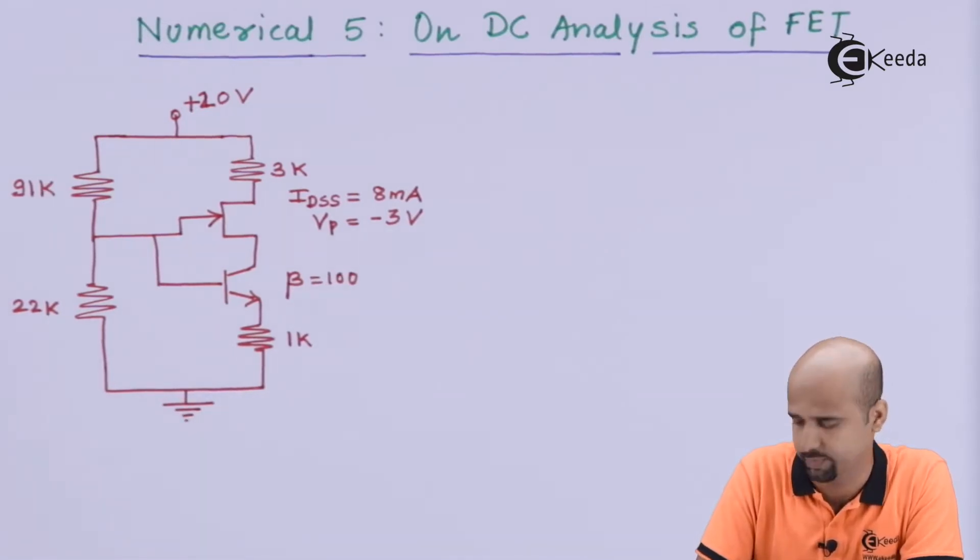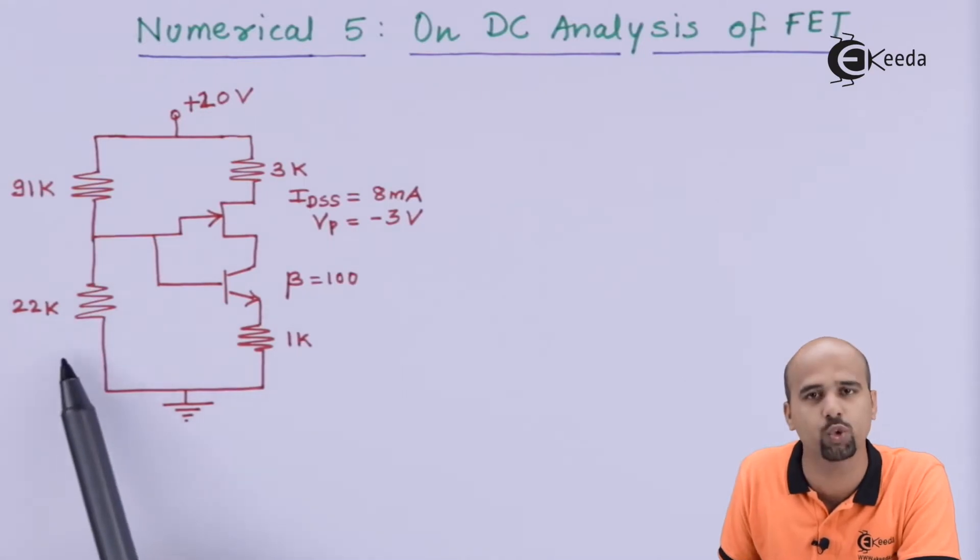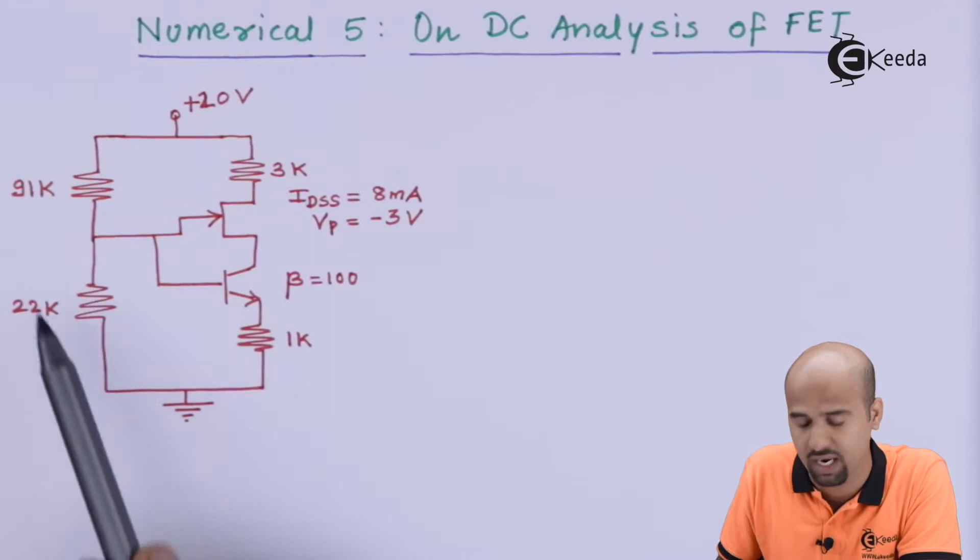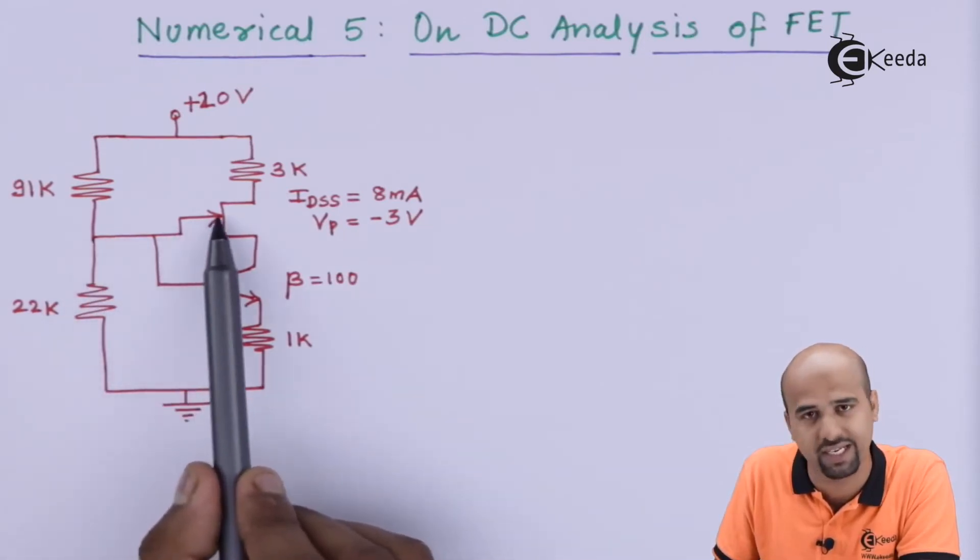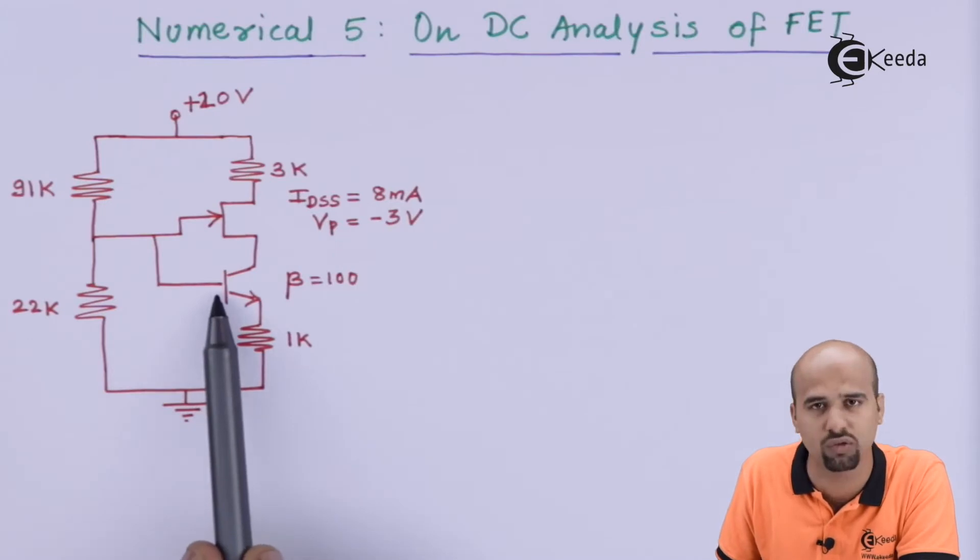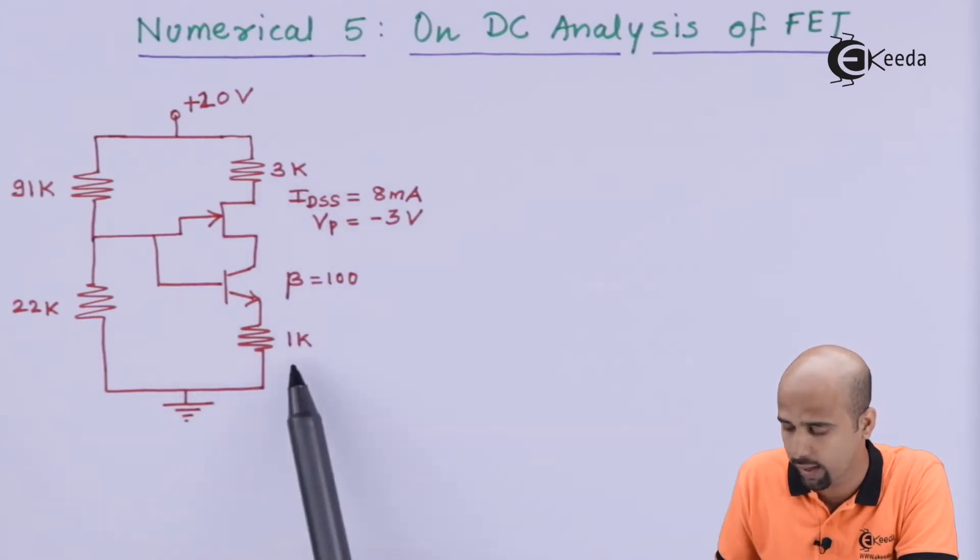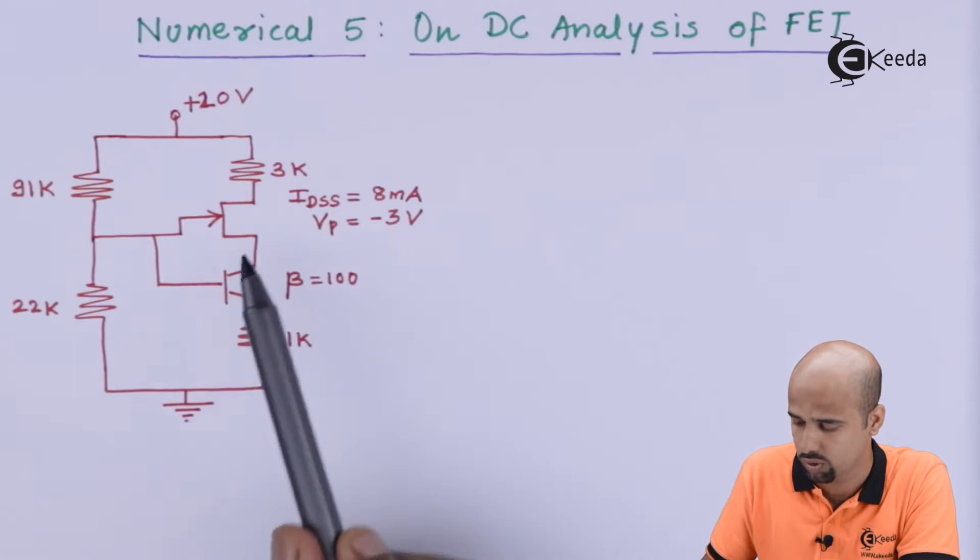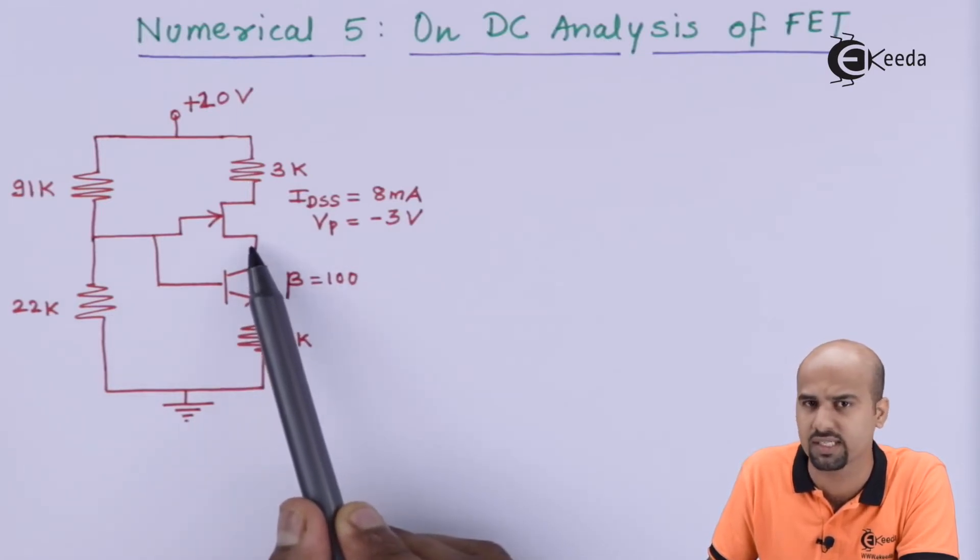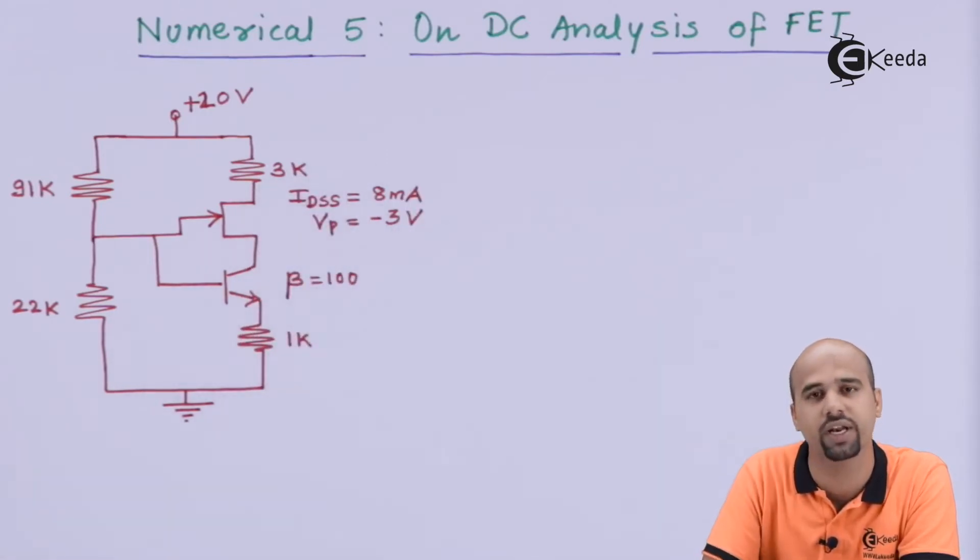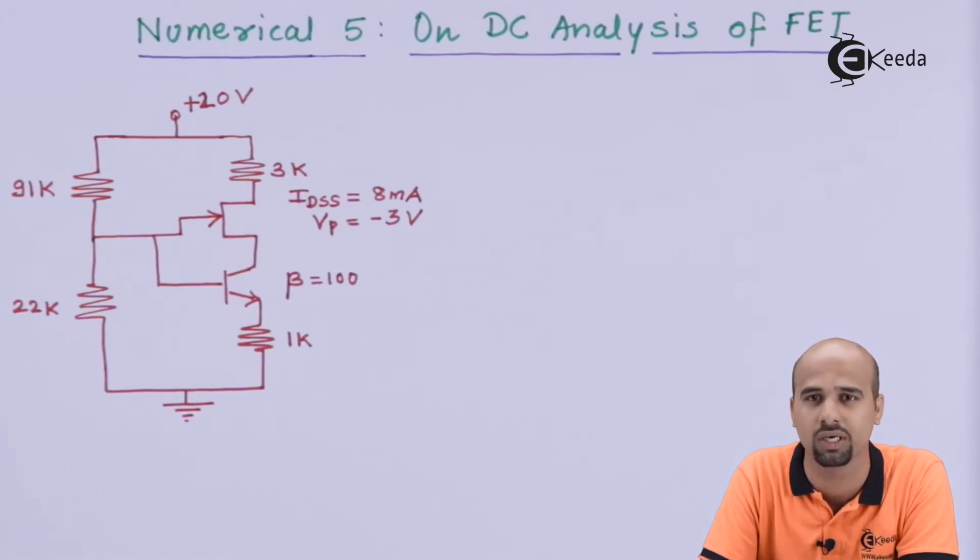So, this is our circuit. See here, 91K and 22K is nothing but the input base current as well as gate current in a combined form. Right? And this node which is common for 91K and 22K which is connected to gate of JFET as well as base of BJT. 3K is drain terminal resistance. 1K is emitter terminal resistance. Now, source of JFET is connected with collector of BJT. All the parameters, rating parameters of JFET and BJT are given and what they ask us is nothing but all the DC values at all the terminals.